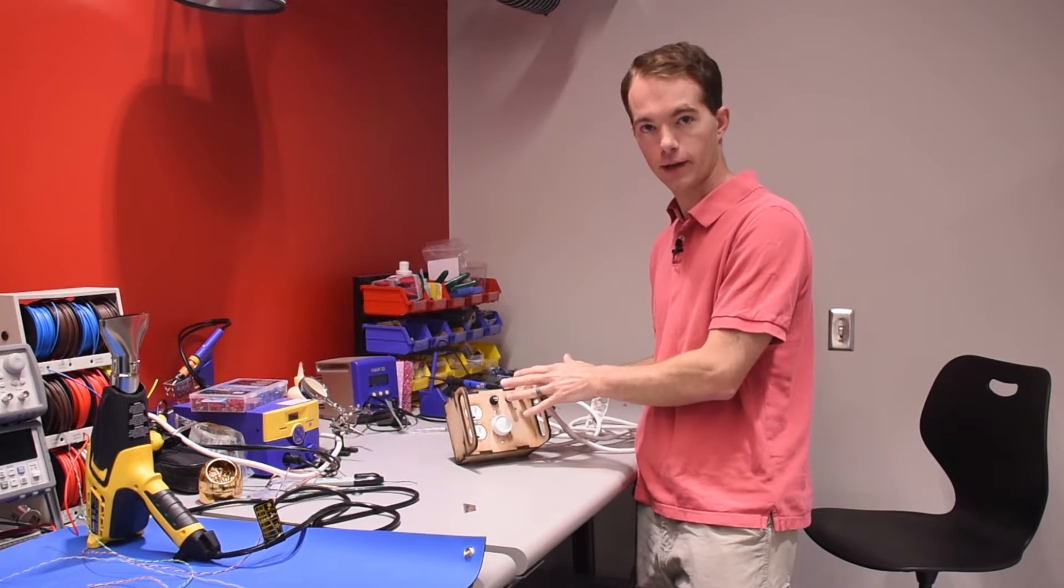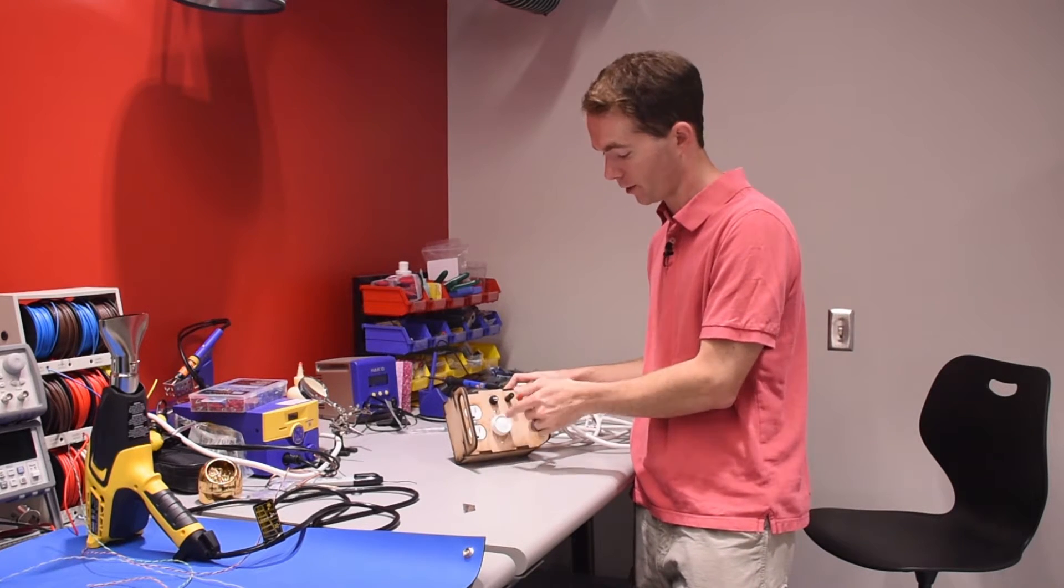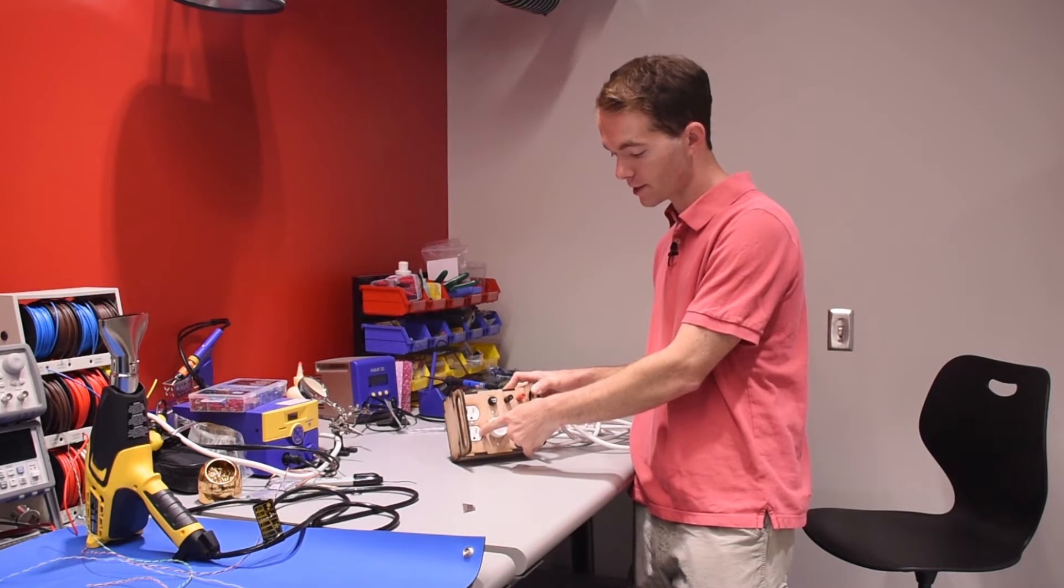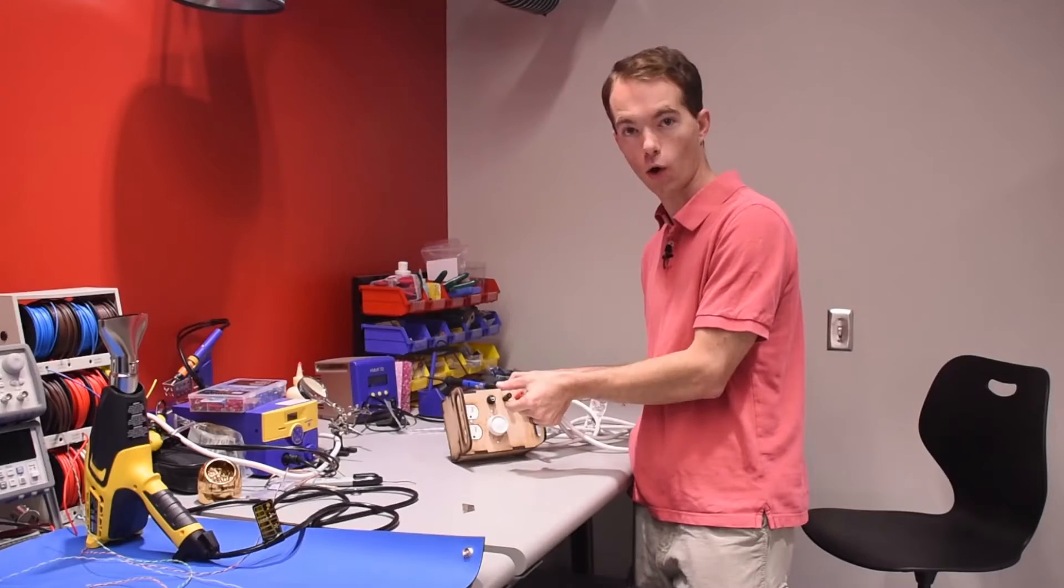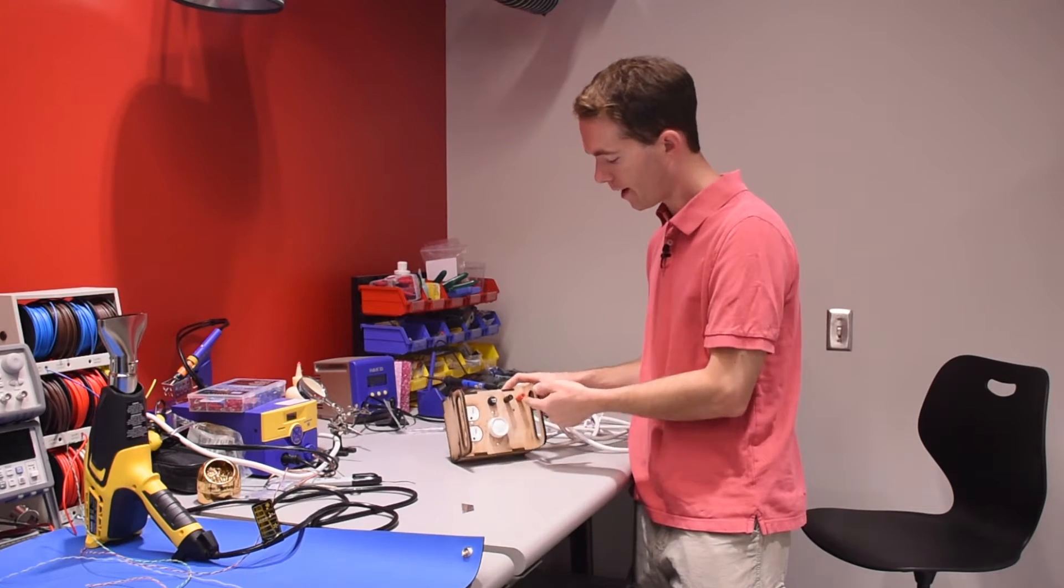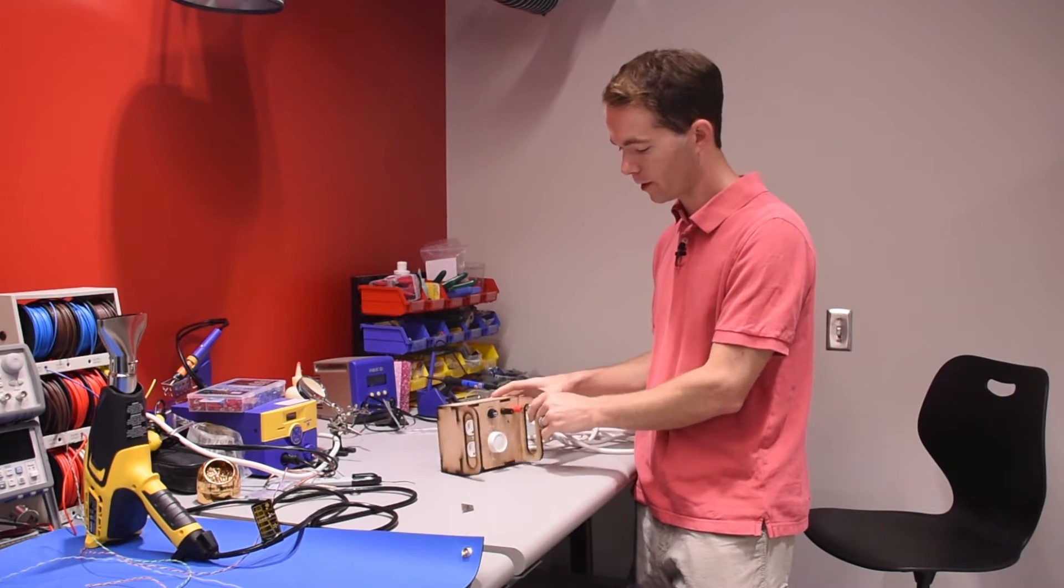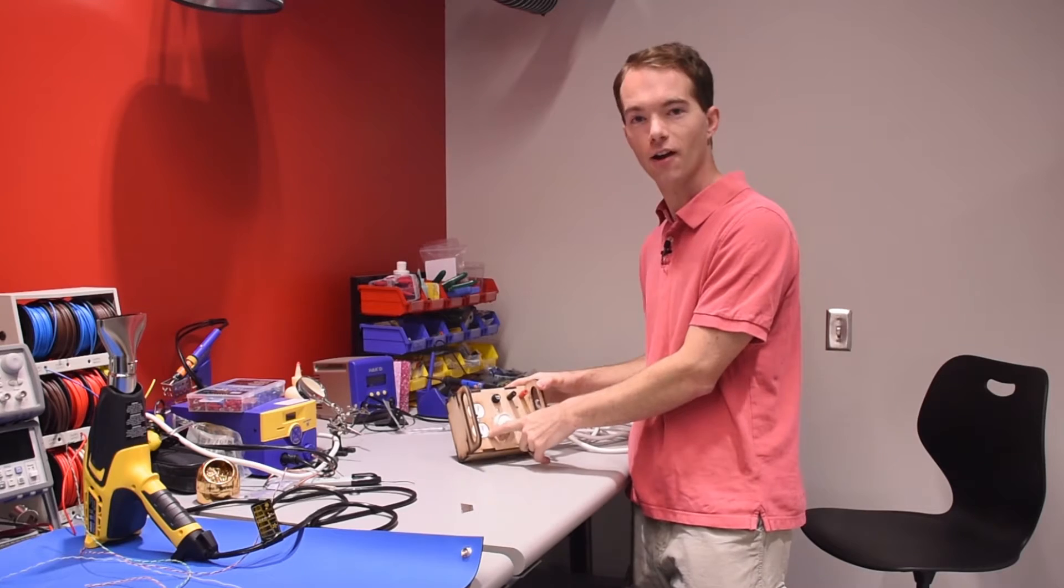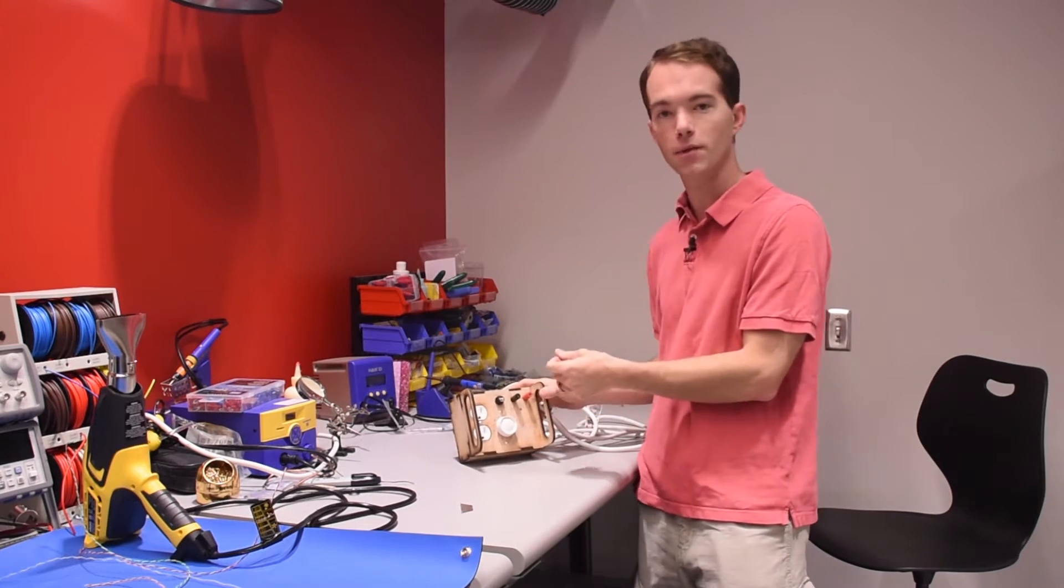It comes out of the dimmer, goes to the hot side which is the small hole here, the small prong, then it comes back in the neutral side out the cord. This gives me dimming control at 120 volts AC.